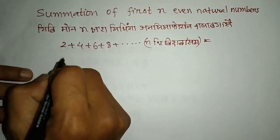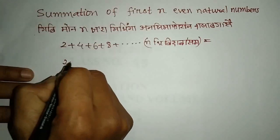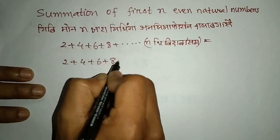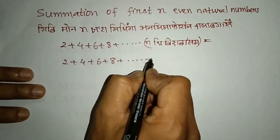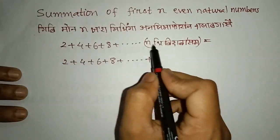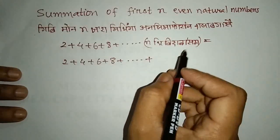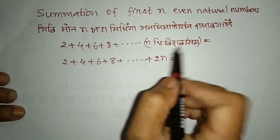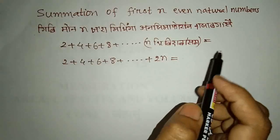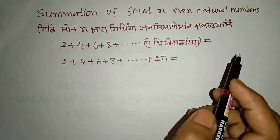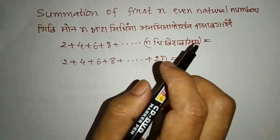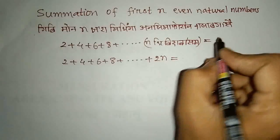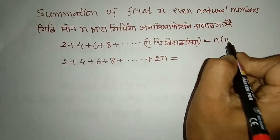So, we will see how the two plus four plus six plus eight plus dot dot dot plus works. We will see the two plus four plus six plus eight plus dot dot dot plus. What if we should do with this formula? The formula is n into n plus one.